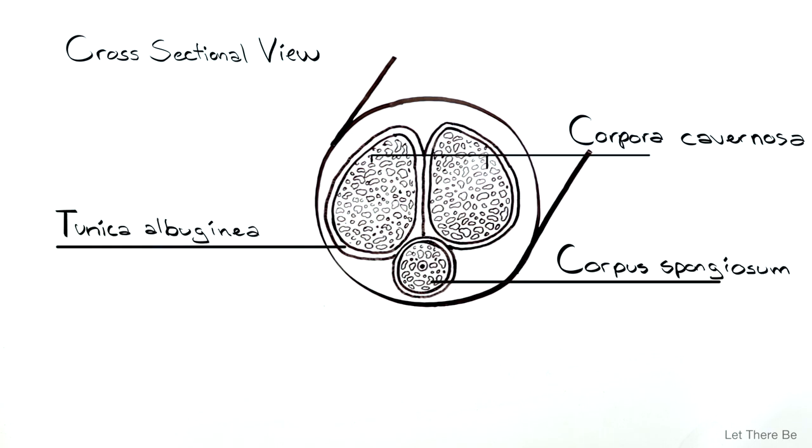A cross-section cut of each cylinder looks like a sponge because of the hollow lacunar spaces that fill with blood during an erection.